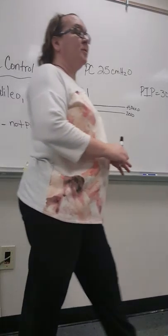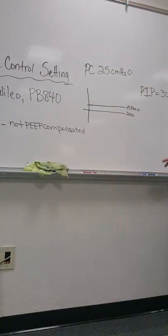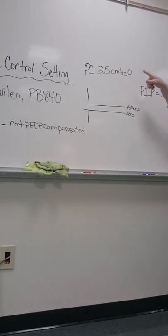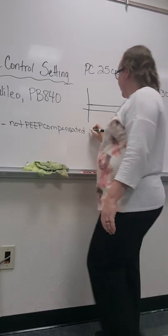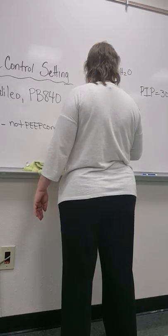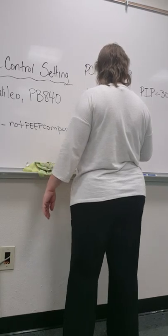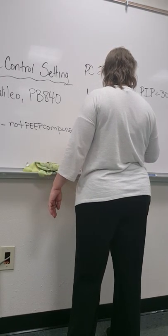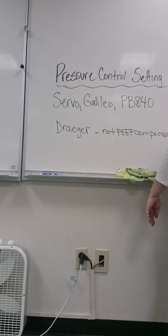Right. So in the Dräger's mind, if it really had a mind, the baseline on the Dräger is 0, even though you have 5 of PEEP set. So when you do the Dräger, you have to add the PEEP into the pressure control setting ordered by the doctor. So on the Dräger, the P-inspiratory pressure, because that's in our setting, has to equal 30.